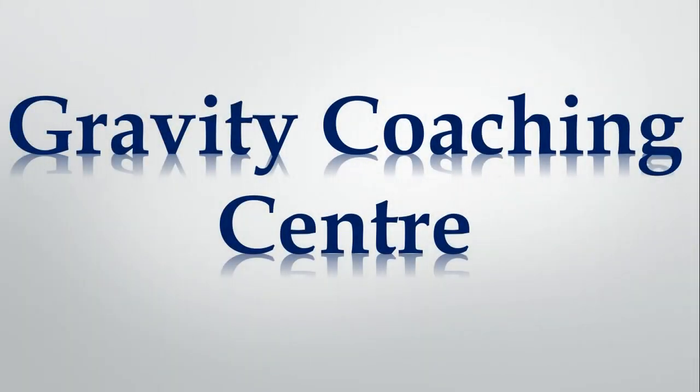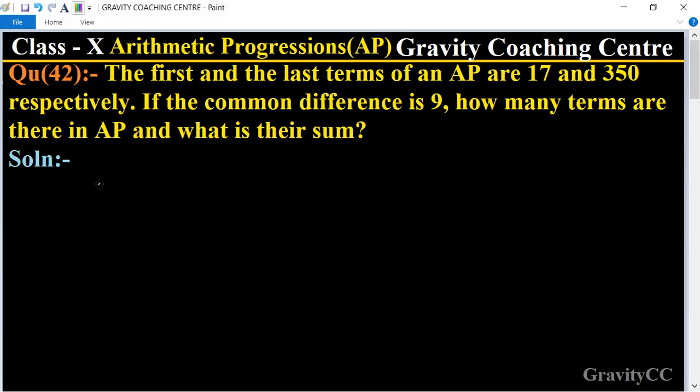Welcome to our channel Gravity Coaching Center, class 10, chapter Arithmetic Progressions, question number 42. The first and the last terms of an AP are 17 and 350 respectively. If the common difference is 9, how many terms are there?